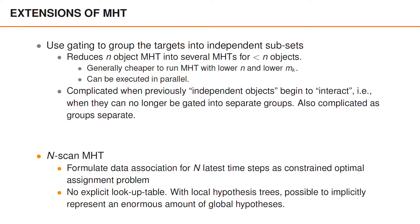In n-scan MHT, the data association for the latest n timesteps is formulated as a constrained optimal assignment problem, somewhat similarly to how we formulated an optimal assignment problem for the current timestep. When we do this, it's typical to not have an explicit lookup table. Instead, we have hypothesis trees, and we find only the optimal n-scan association. This means that it's possible to implicitly represent an enormous amount of global hypotheses.